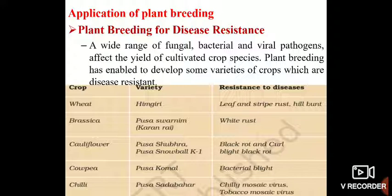For example, we have a variety of wheat known as Hemgri, which is resistant against leaf and stripe rust as well as hill bunt. In Brassica, a variety known as Pousa Suvarnim has been created which is resistant against white rust.